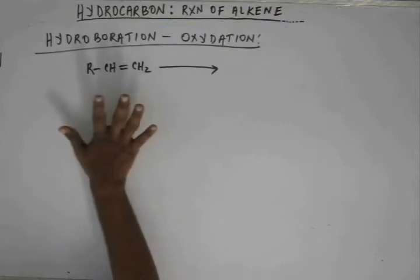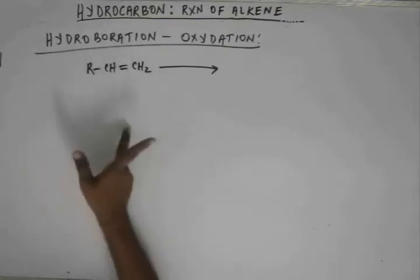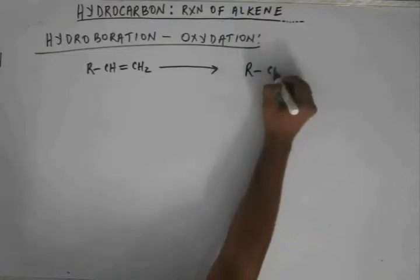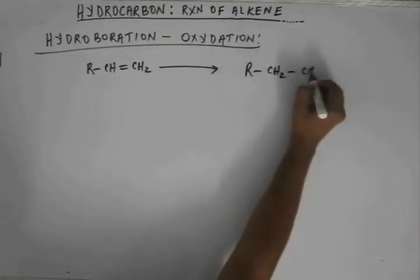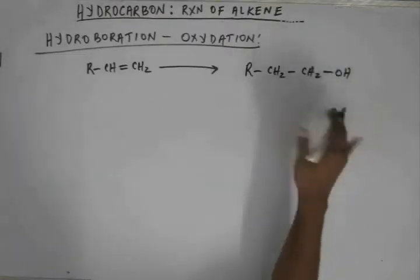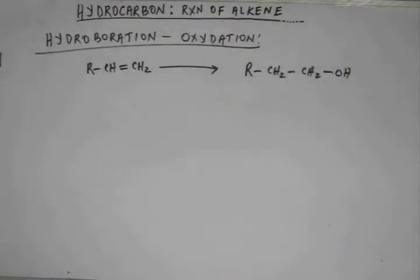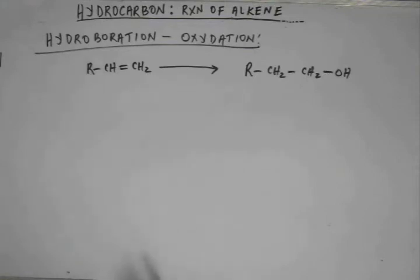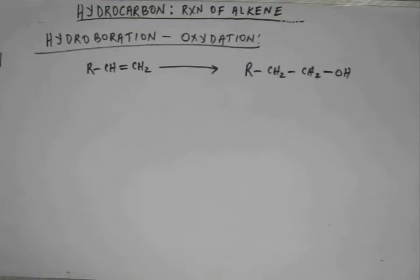Last time we had the Markovnikov product without rearrangement. This time we will have the anti-Markovnikov product without rearrangement. The OH group will get attached to one of the two carbons forming the alkene which is less substituted. That would be the anti-Markovnikov rule — anti-Markovnikov product without rearrangement.